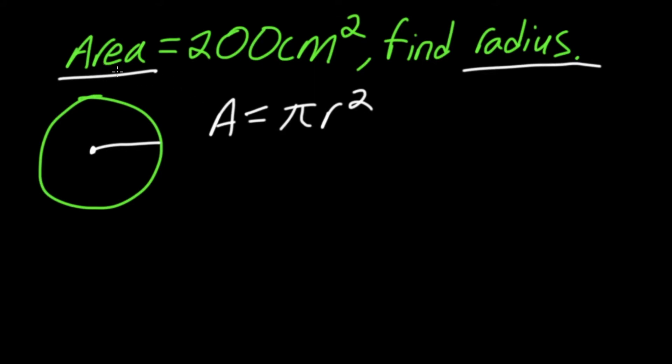Because we have been given our area of 200 centimeters squared, we can actually put that into our formula. So because our area is 200, A can be replaced with 200, and the rest will stay the same.